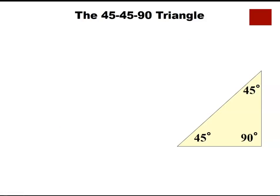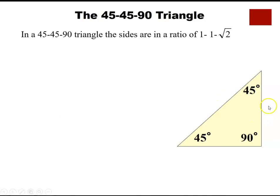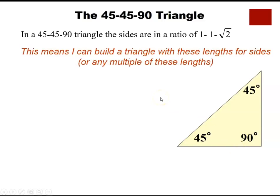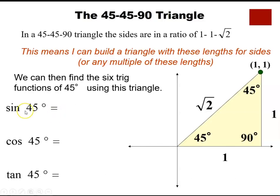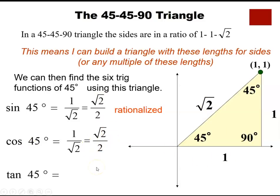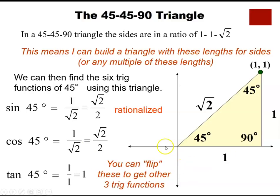Let's compute trigonometric functions for the special 45-45-90 triangle. Since both acute angles are equal, the two legs are equal. Sine 45 equals opposite over hypotenuse, which is 1 over square root of 2 — rationalized to square root of 2 over 2. Cosine 45 is also square root of 2 over 2, and tangent 45 equals 1.